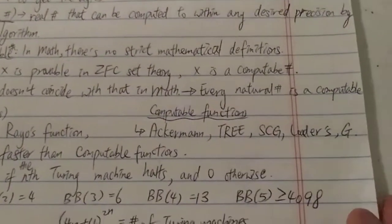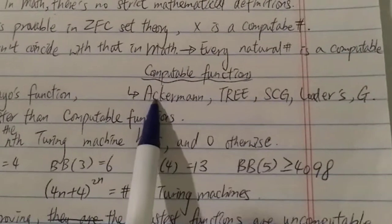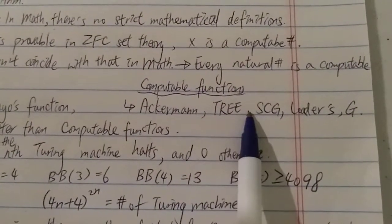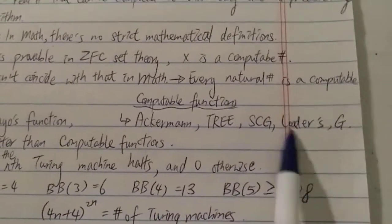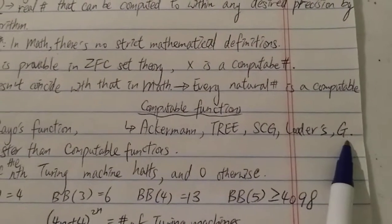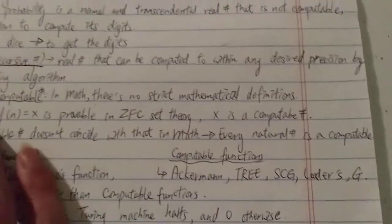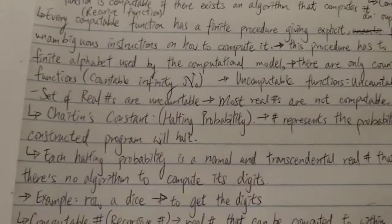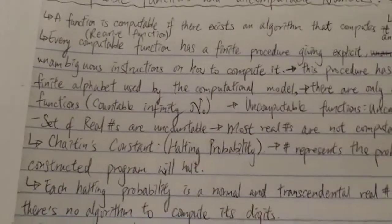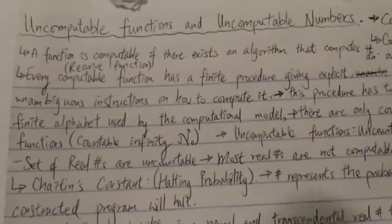Some of the most well-known computable functions are of course the Ackermann function, the tree sequence, SCG, Loader's number function, G sequence, the G function from Graham's number, and also factorial. Basically any addition, multiplication, those kinds of things - they are all computable functions.